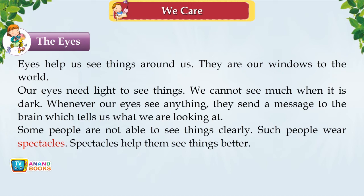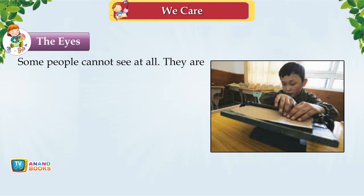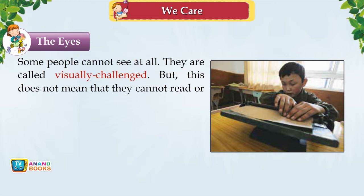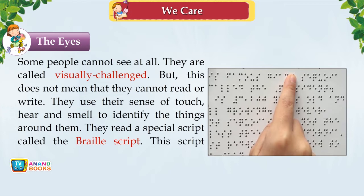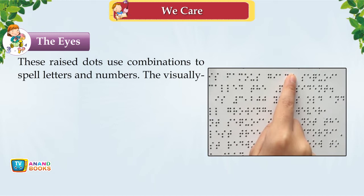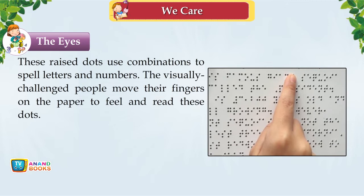Some people cannot see at all — they are called visually challenged. They use their sense of touch, hearing and smell to identify things around them. They read a special script called the Braille script, which consists of raised dots on paper that spell letters and numbers. The visually challenged move their fingers on the paper to feel and read these dots. The Braille script was developed by Louis Braille, who was himself visually challenged.